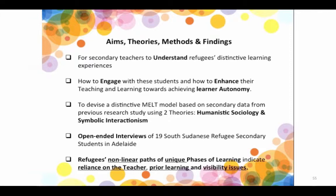Using two theories — humanistic sociology with cultural values, and symbolic interactionism with relationships — and open-ended interviews of 19 students, we found that the paths of learning for the refugees were non-linear and there were unique phases. Another strong result was the reliance on the teacher, and also the students accessing their own prior learning, along with visibility issues.